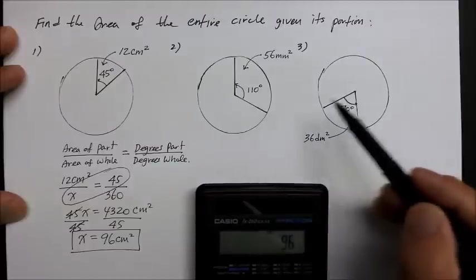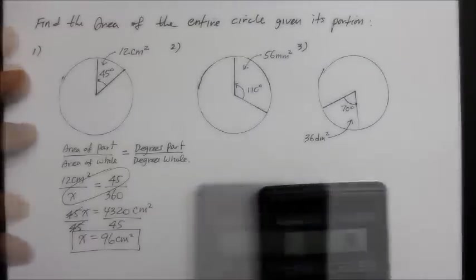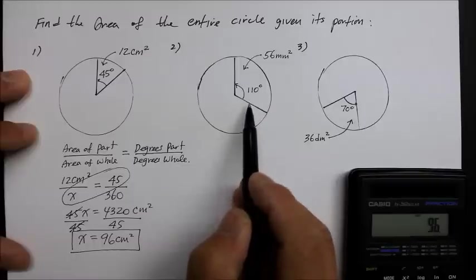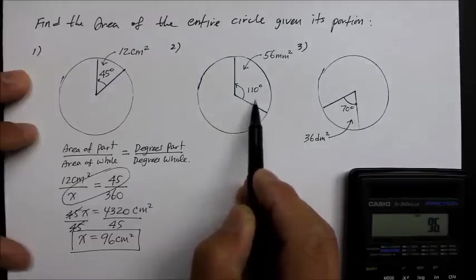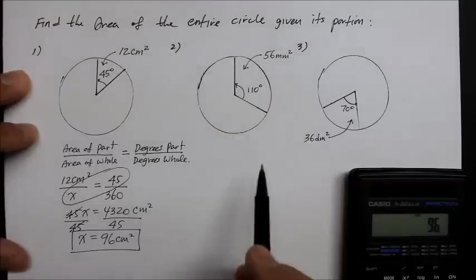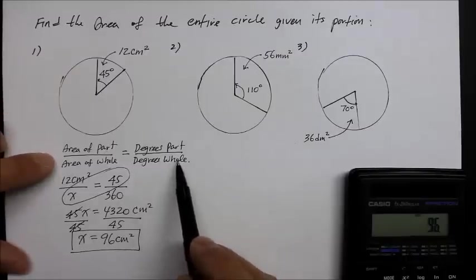Now, can you do numbers 2 and 3 on your own? Go ahead. This time, we have a circle with a bigger portion. And that portion is 56 millimeters squared. So, what is the entire thing given that info? So, let's go ahead and use the same proportions and ratios set up over here as a template.